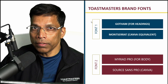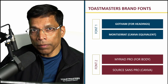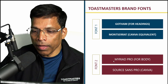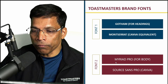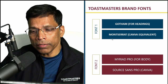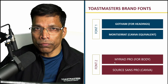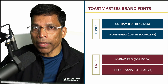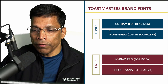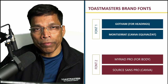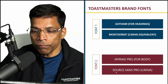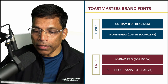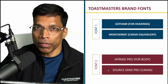The next design element is fonts. A Toastmaster brand compliant poster can use only two fonts: the Gotham font and the Myriad Pro font. Gotham is typically used for headings while Myriad Pro is used for body text. Both of these fonts are paid fonts and not available in Canva. As per the brand guidelines, we are allowed to use Montserrat wherever you would use Gotham, and Source Sans Pro instead of Myriad Pro. Both Montserrat and Source Sans Pro are free fonts available in Canva.